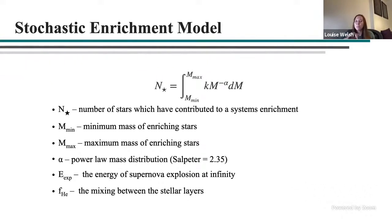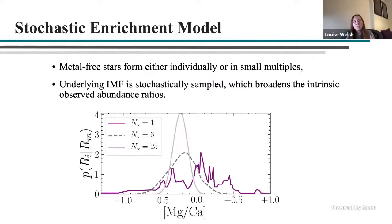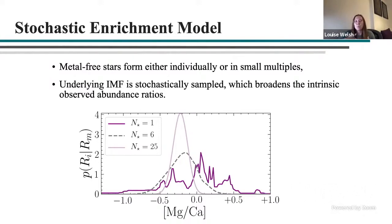In addition to the mass distribution, we also gauge the energy of the supernova explosion and the mixing between stellar layers. A key benefit of this model is that because metal-free stars are expected to form individually or in small multiples, the underlying IMF is stochastically sampled. That means the observed distribution of abundances like magnesium-to-calcium will change depending on the average number of stars chemically contributing to each system. As shown in this figure, as objects are enriched by more and more stars, the distribution of magnesium-to-calcium becomes increasingly centrally concentrated.